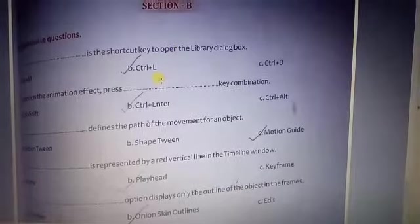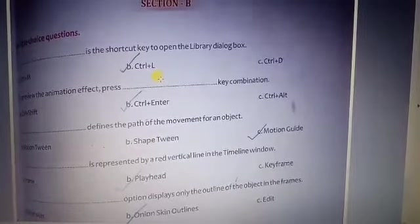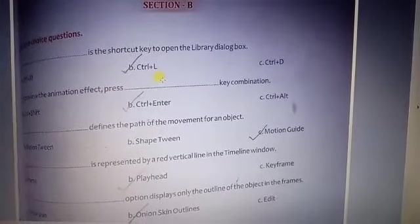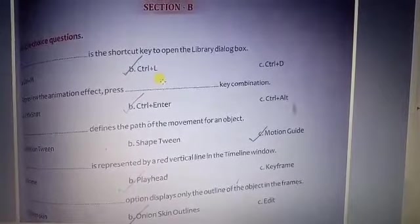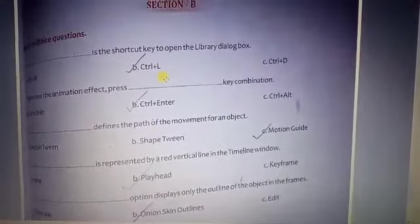The shortcut key to open the library dialog box is Ctrl+L. By pressing Ctrl+L, we open the library box. Next one: To preview the animation effect, press Ctrl+Enter key combination.